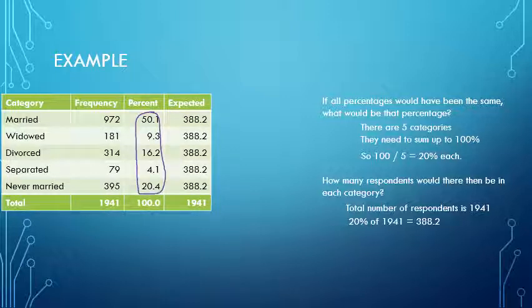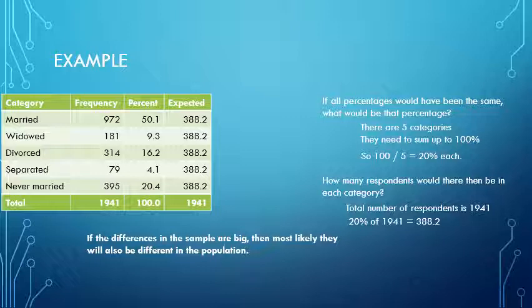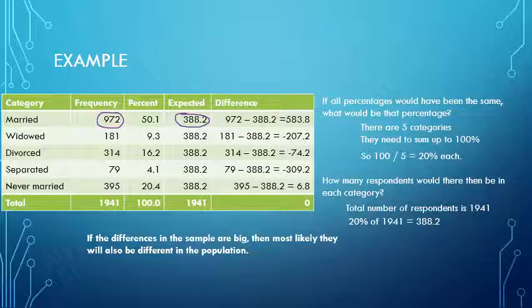If there are differences—because here we have 388 expected and we actually have 972—if those differences are big, then most likely they will also be different in the population. I've calculated the differences between the frequency and expected each time. If these differences are considered to be big in total, then we might conclude that in the population the percentages might also not be equal. The big question is when will it be considered big?